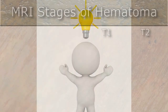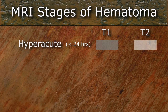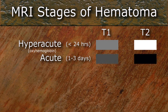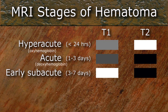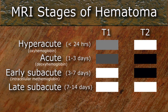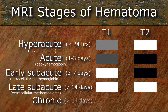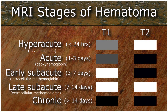One last review before we wrap up: the hyperacute bleed is less than 24 hours old with dominant species oxyhemoglobin. The acute bleed is 1 to 3 days with dominant species deoxyhemoglobin. Early subacute is 3 to 7 days with dominant species intracellular aquamethemoglobin. Late subacute is 7 to 14 days dominated by extracellular aquamethemoglobin. Finally, the chronic hematoma is greater than 2 weeks old with multiple breakdown products including hemichromes, ferritin, and hemosiderin — the latter two products dominating the T1 and T2 signal characteristics of the chronic thrombus. As always, thanks for watching and we'll see you next time.